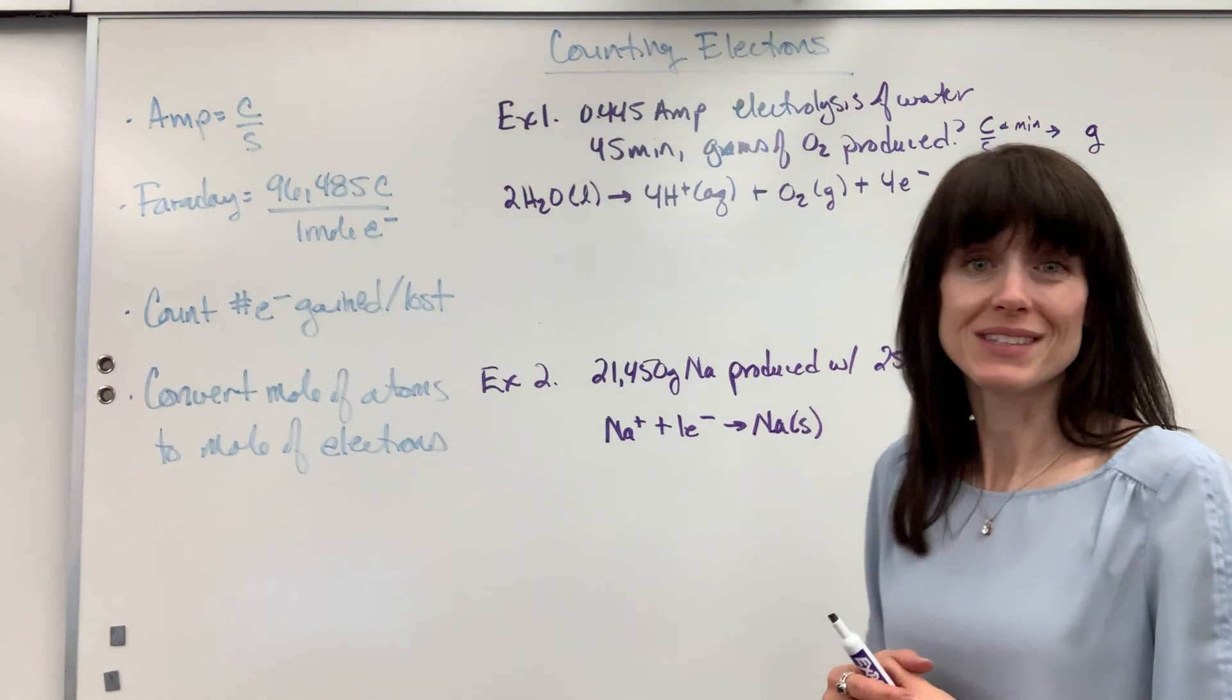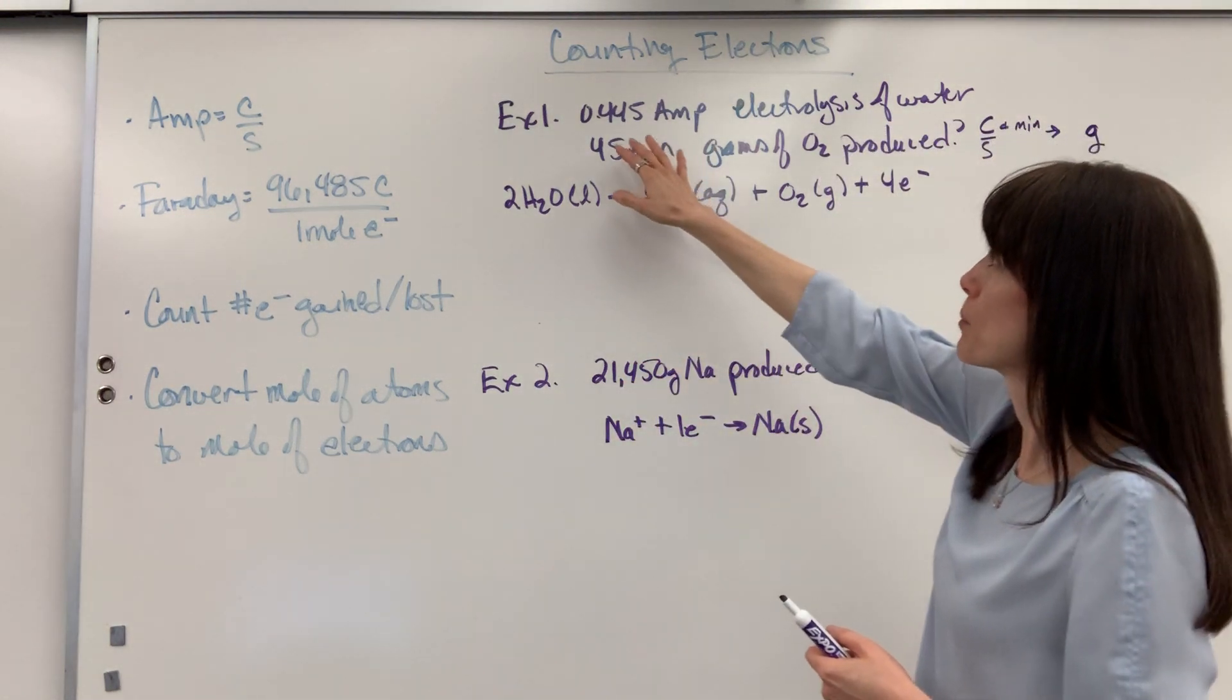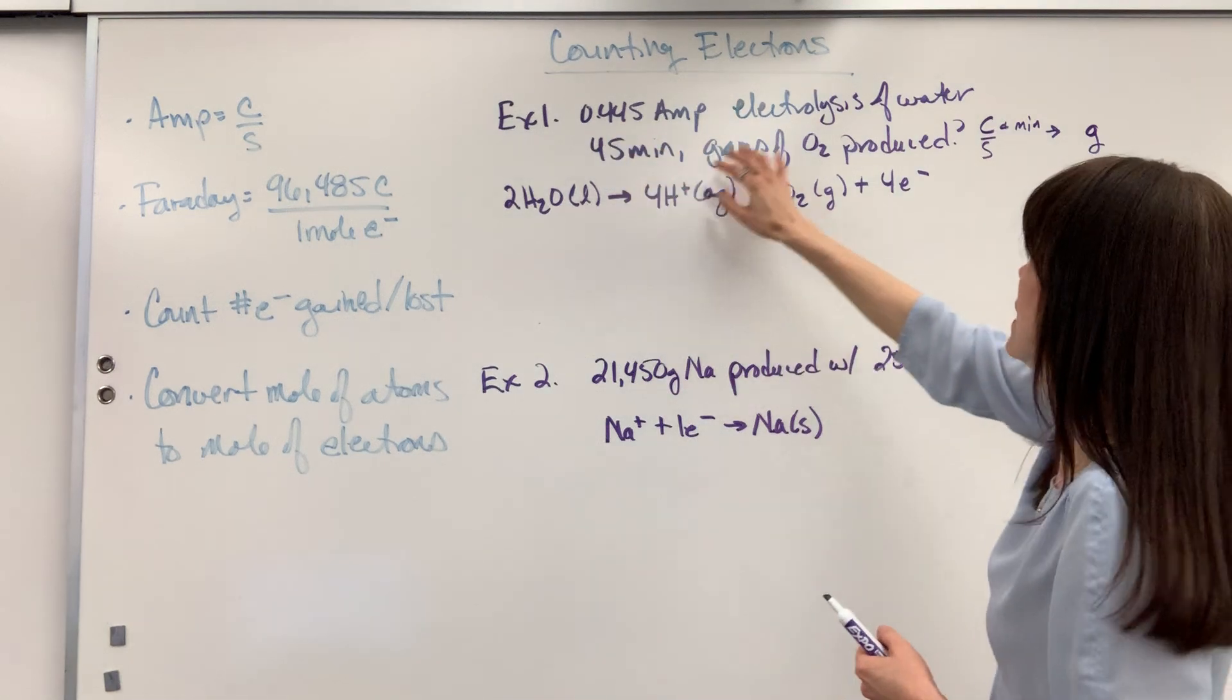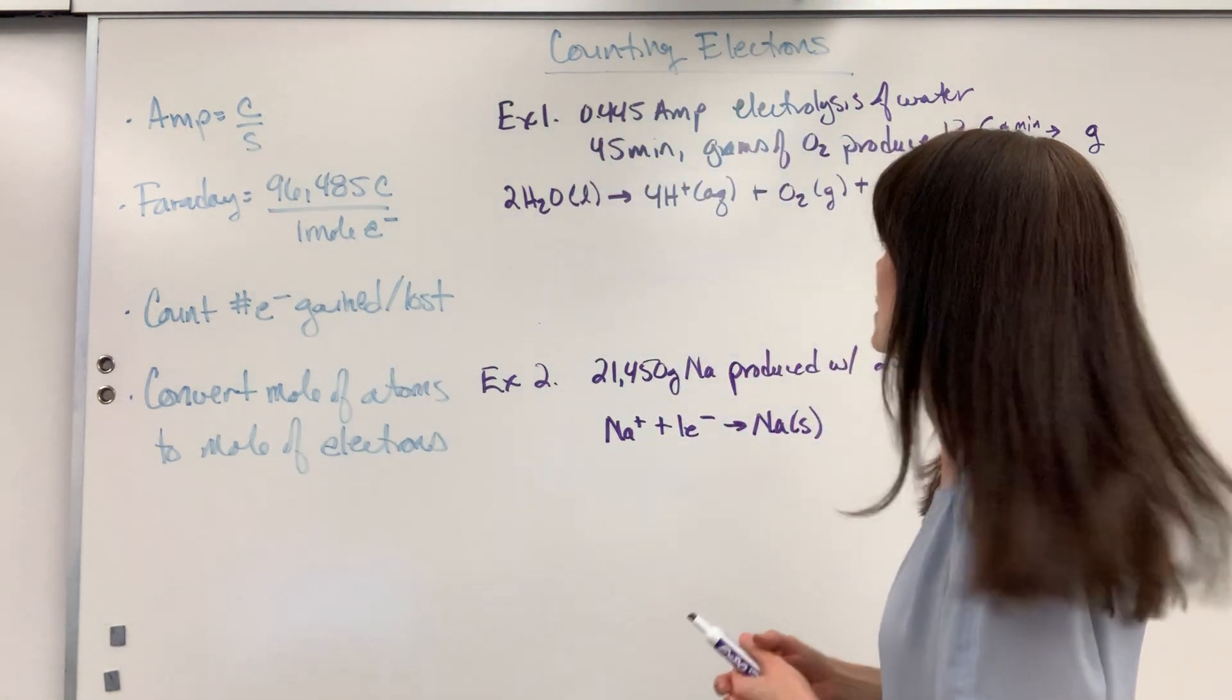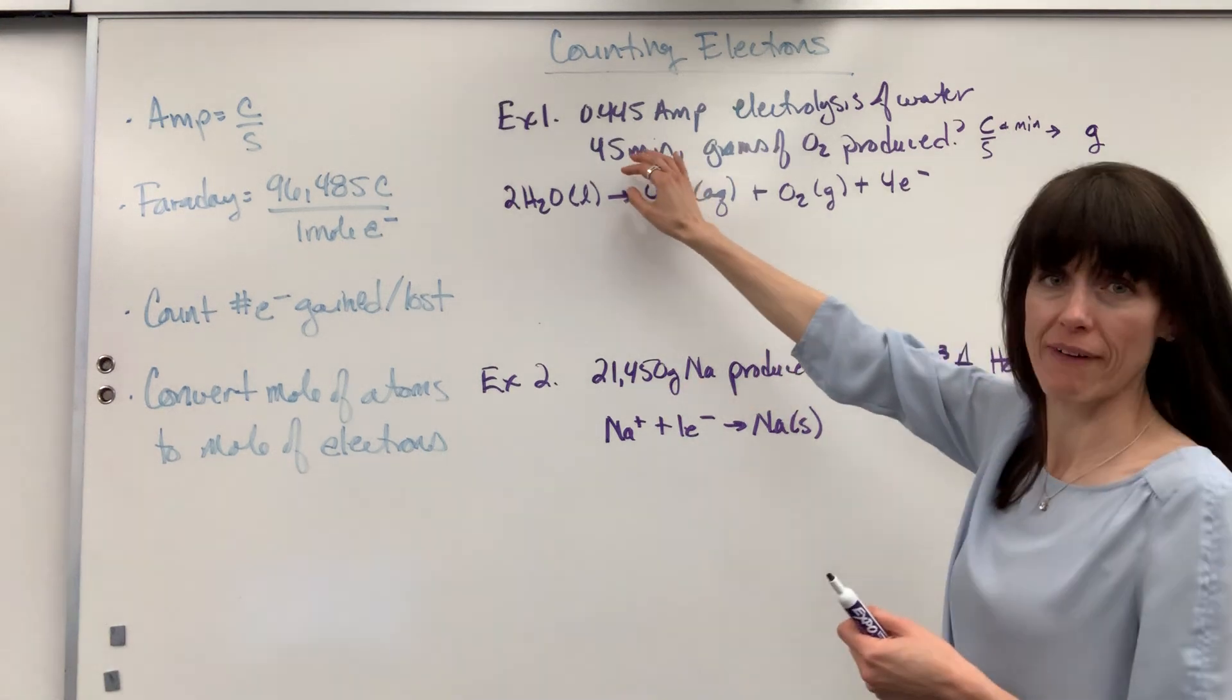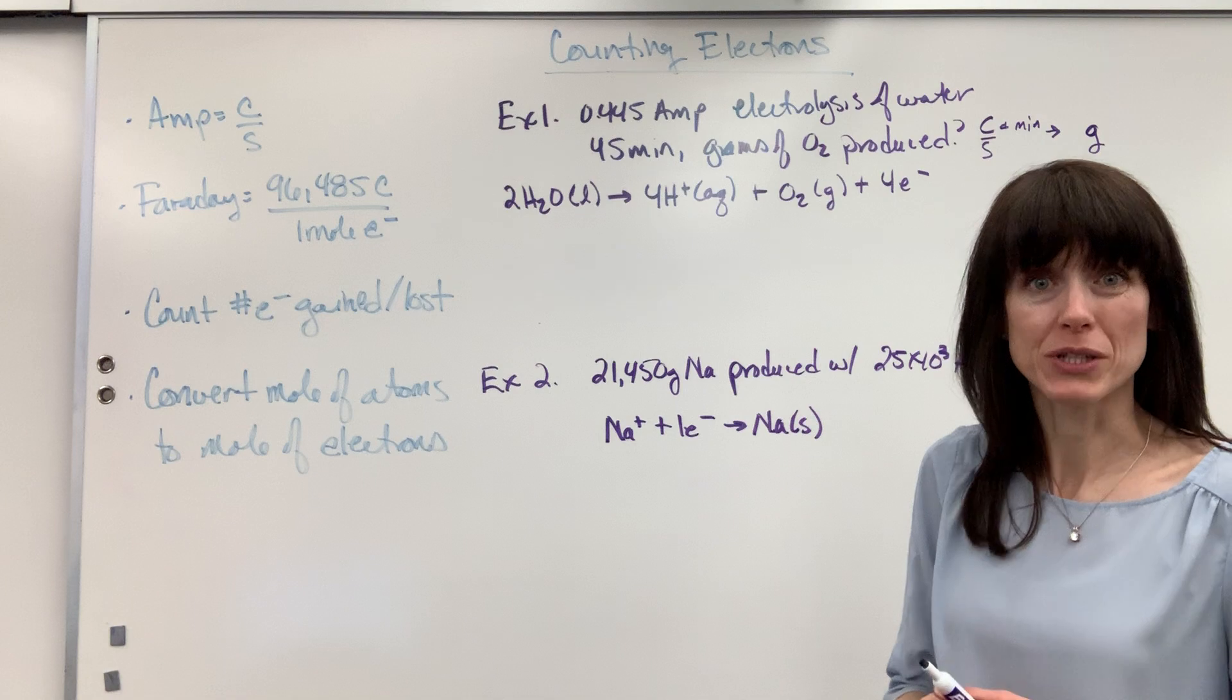As always, one of the best ways to learn is just to do a couple of problems. So, let's do example problem one. We're going to have an amperage of 0.445. It's the electrolysis of water. So, we're breaking water into hydrogen and oxygen. It's going to take 45 minutes. And the question is, what's the mass of oxygen that's going to be produced?